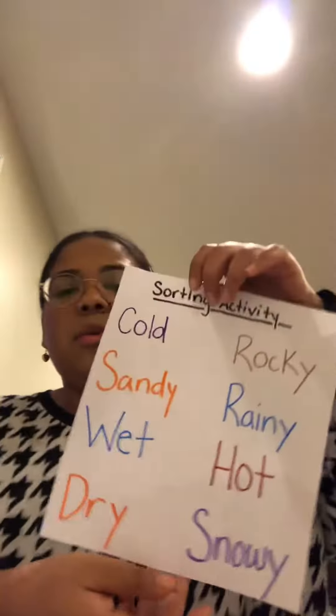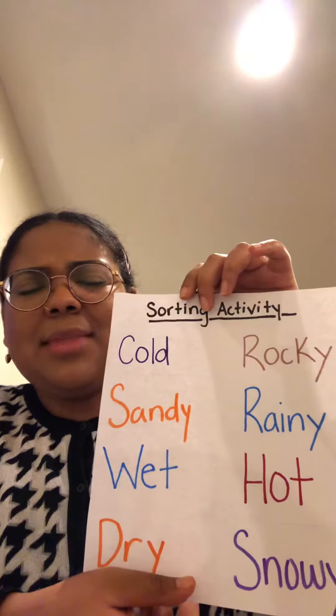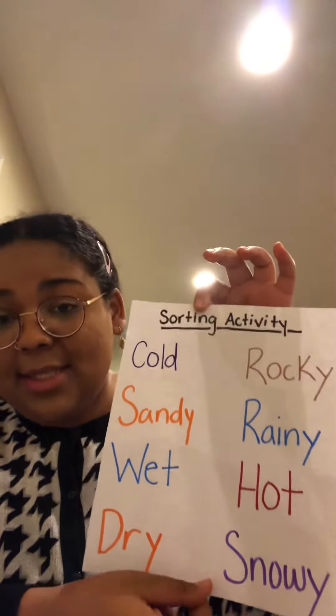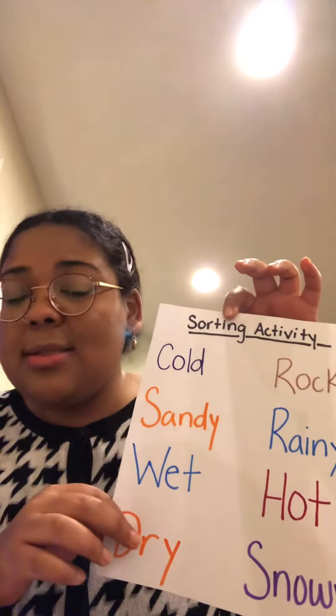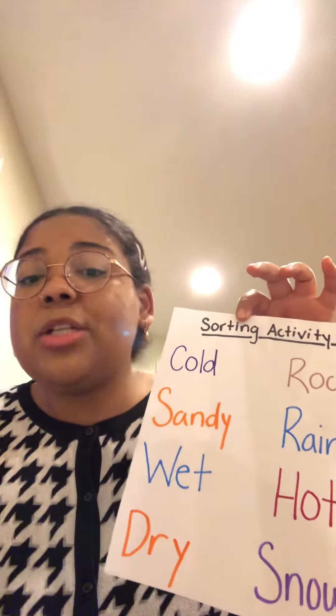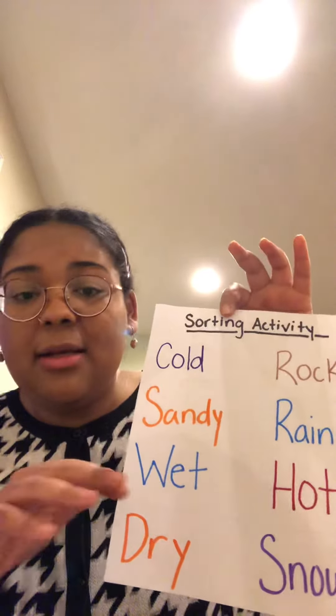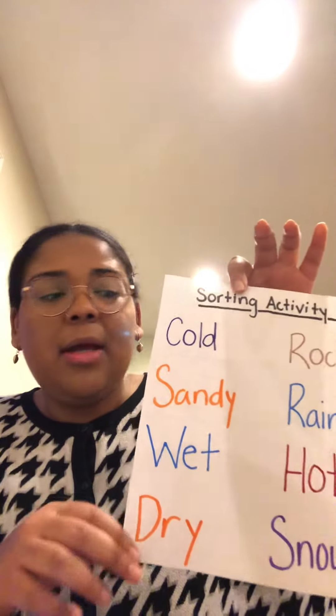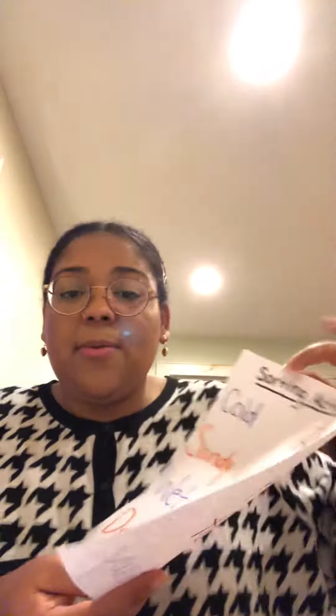One option if you do not have access to a printer is to go on our lessons Padlet and take a look at the habitat characteristics I have listed there. They're the same ones that are on the sorting worksheet. You can write them on a blank piece of paper, cut them out, and sort them into the two different piles, just like those who have a printed worksheet would do.